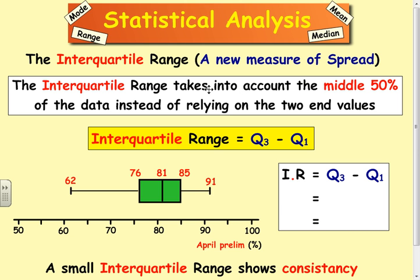So the interquartile range takes into account the middle 50% of the data, instead of just focusing on the end values, i.e. the highest and the lowest mark. Sometimes if you're talking about tricky test marks, the highest and the lowest mark don't tell you what's happening. The middle 50% quite often tells you roughly how well your class is doing.